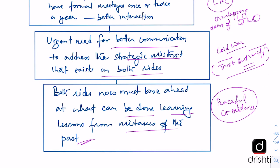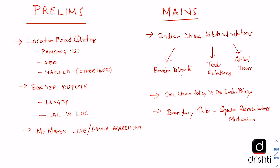For prelims, location-based questions can be asked to identify Pangong Tso, Daulat Beg Oldi, or Nakula. One should know the length of the border shared between India and China. Know the difference between LAC — Line of Actual Control between India and China — and LOC — Line of Control between India and Pakistan. Also be aware of the McMahon Line and the Shimla Agreement of 1914 between British India and Tibet, which China does not recognize.